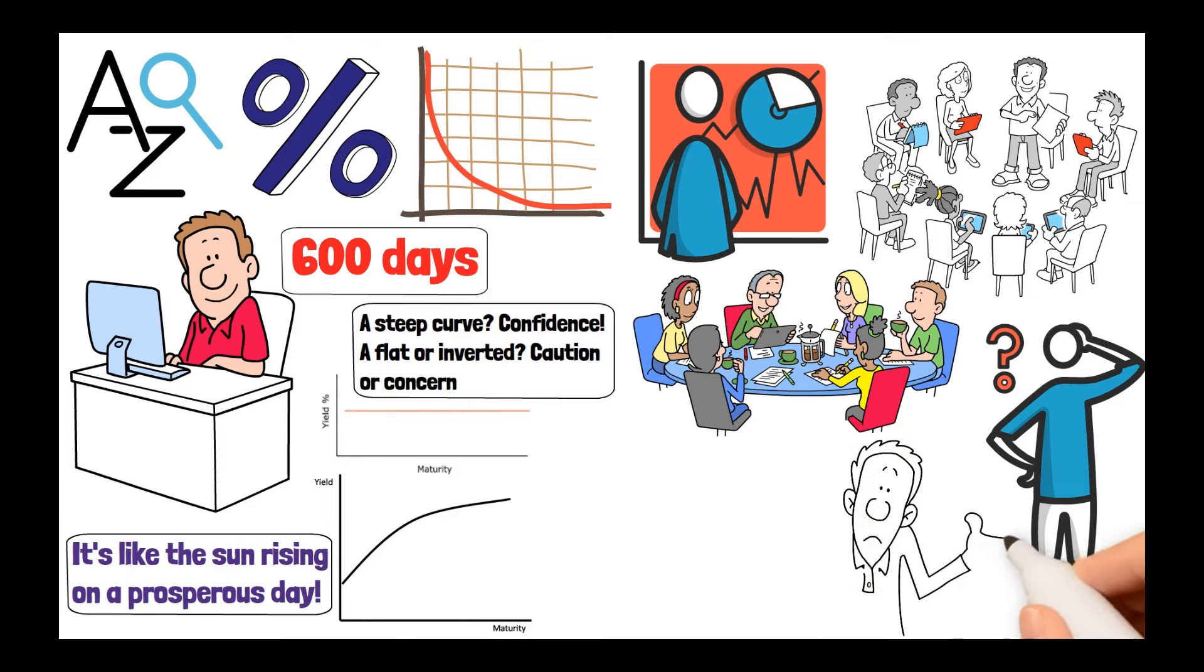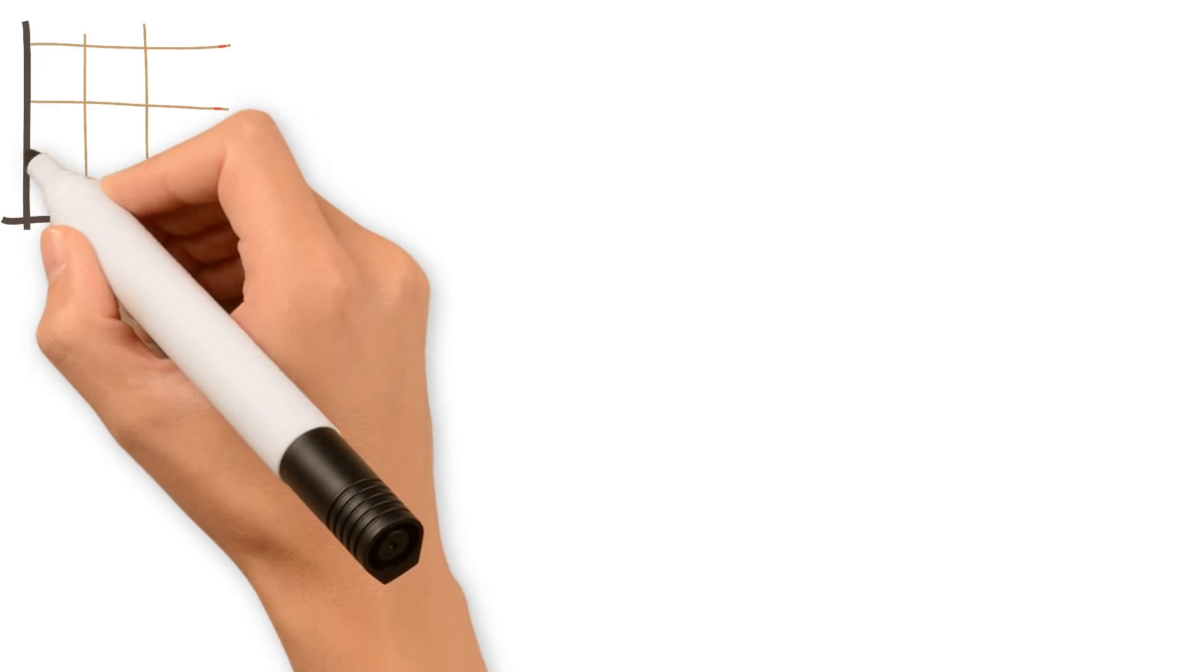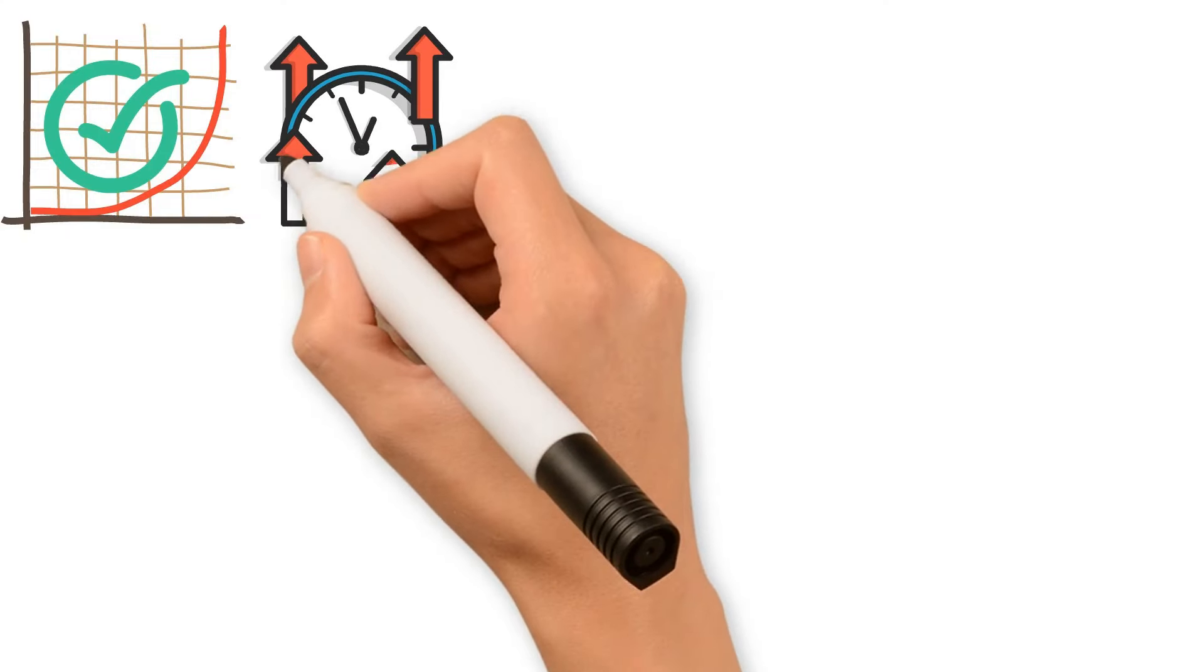But how well can we trust the yield curve? Well, let's see if it has correctly predicted the economy in the past. Throughout history, the yield curve has been like a financial oracle, whispering predictions about the economy. When it inverts, it's often a prelude to recession.